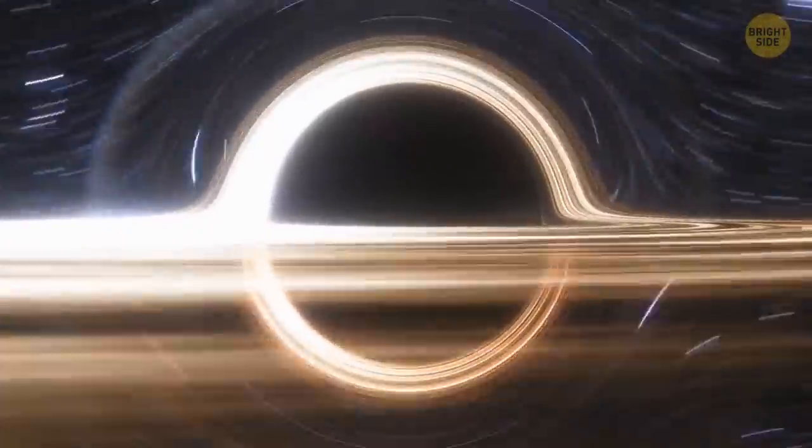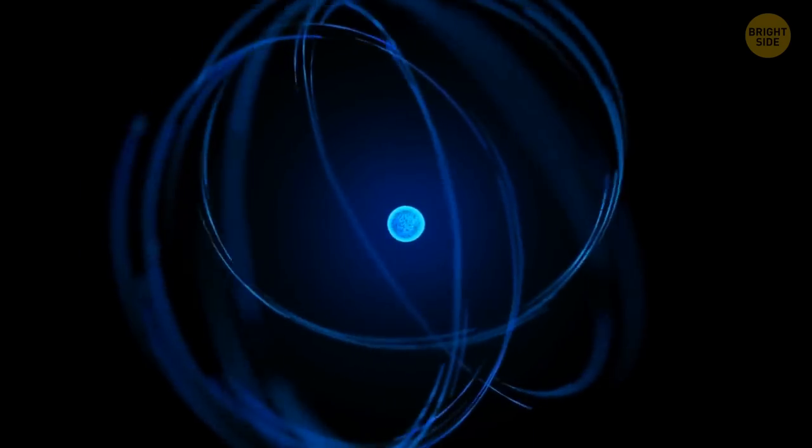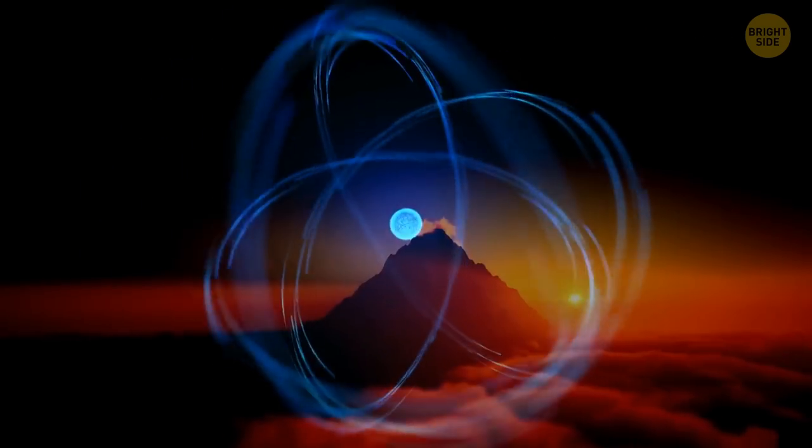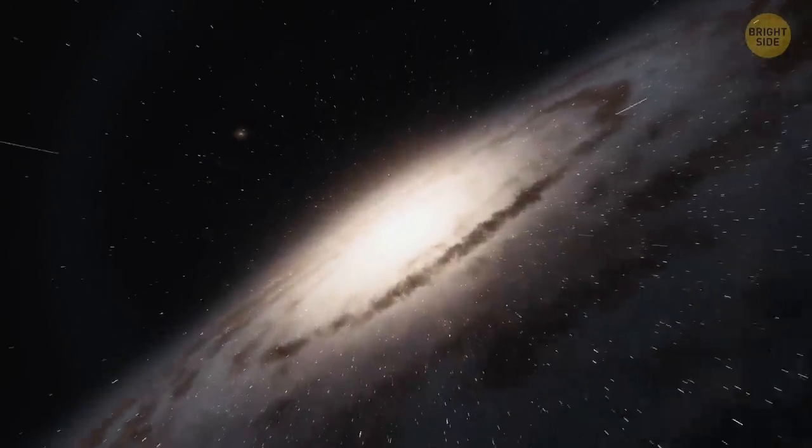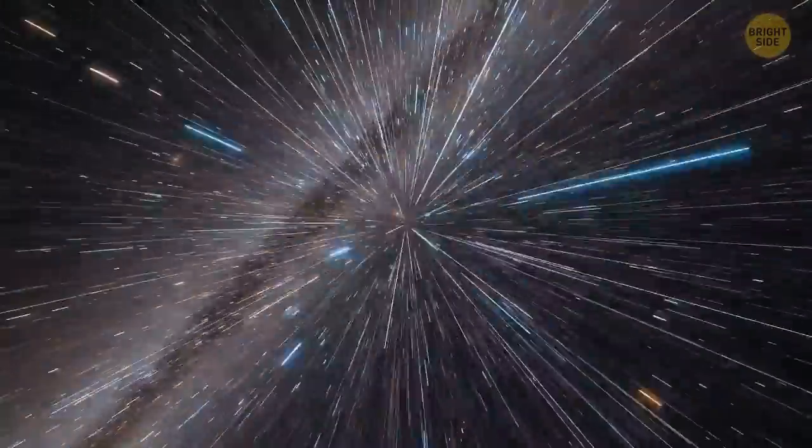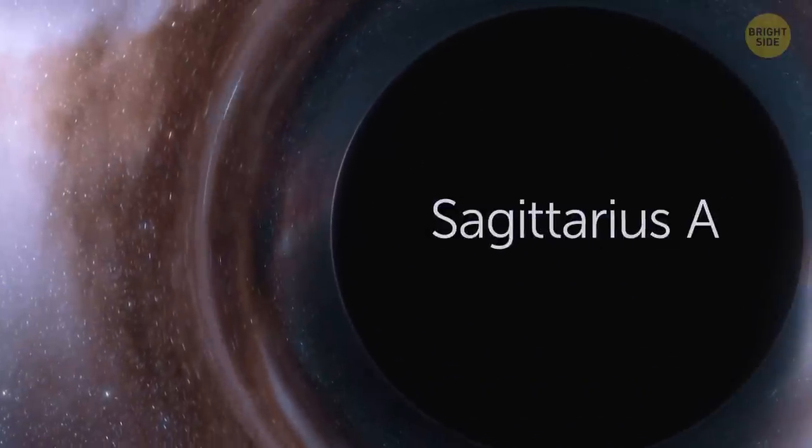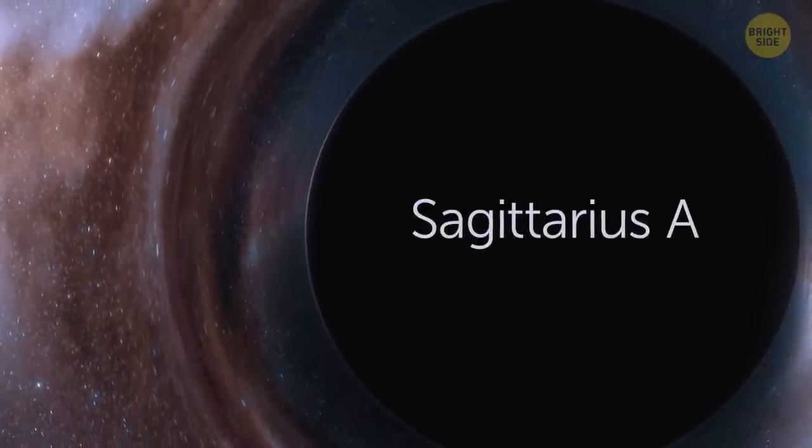Speaking of, a black hole that's as big as a single atom has the mass of a really big mountain. There's one at the center of the Milky Way called Sagittarius A. It has a mass like 4 billion suns. But luckily, it's far away from us.